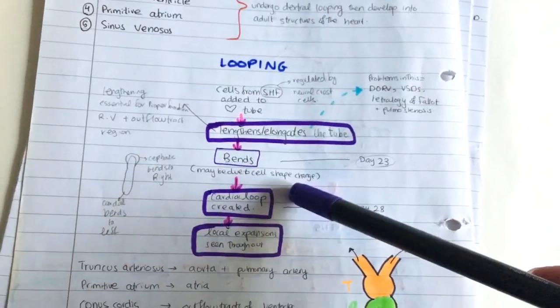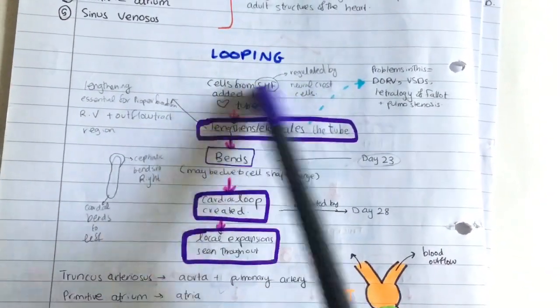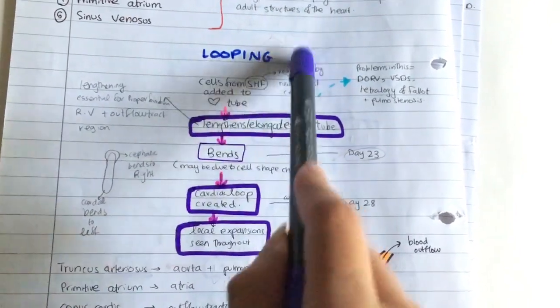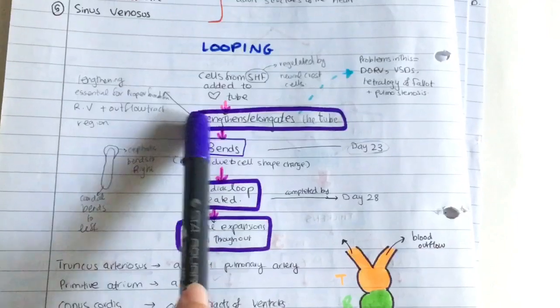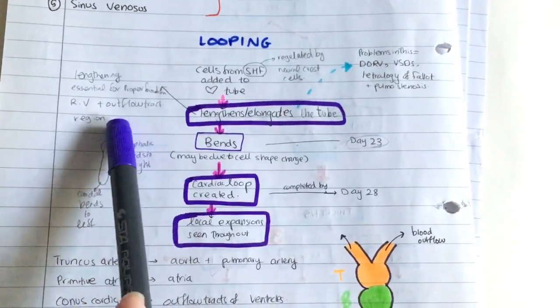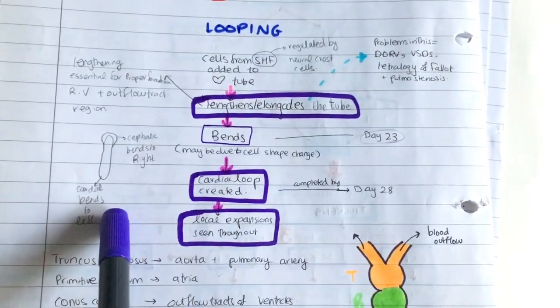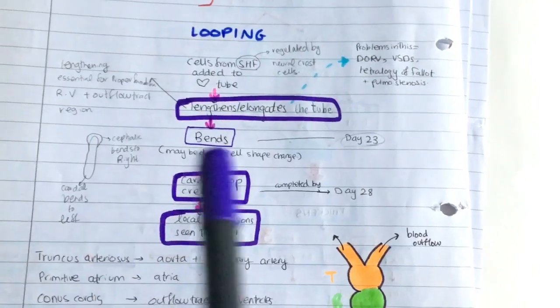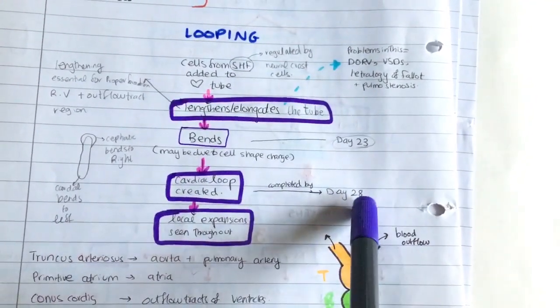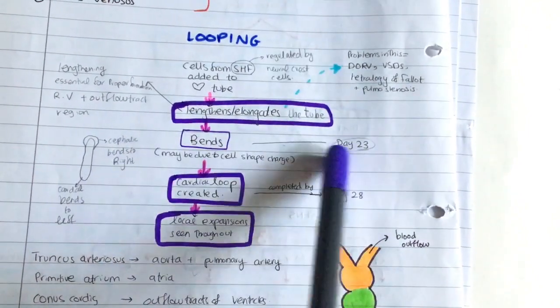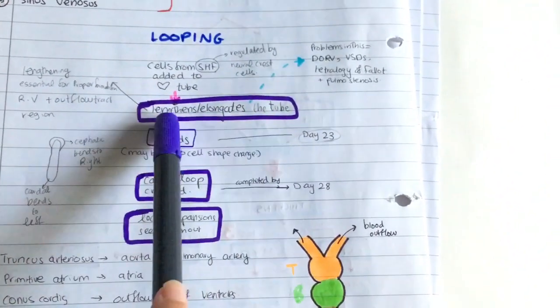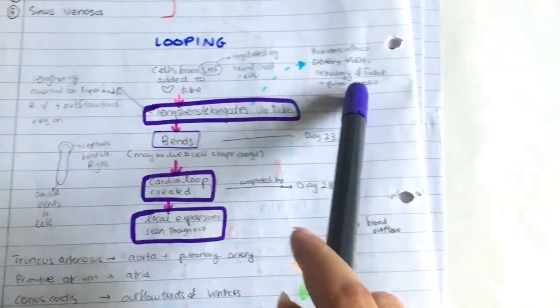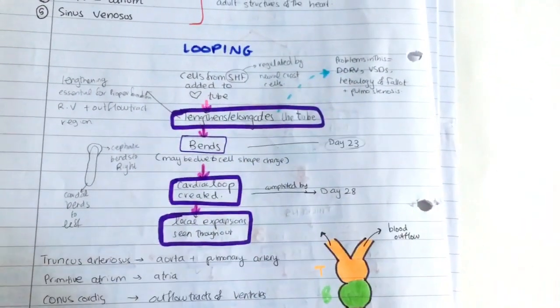Then we have looping. Cells from the secondary heart field are added to the heart tube, regulated by neural crest cells. This lengthens and elongates the tube, which is essential for proper formation of the right ventricle and the outflow region. Then this bends, and a cardiac loop is created. The cephalic end bends towards the right, and the caudal end bends towards the left. The cardiac loop is created by day 28, and the heart tube bends at about day 23. If this doesn't happen, if it doesn't lengthen or elongate, we have congenital heart anomalies like tetralogy of Fallot and ventricular septal defects.